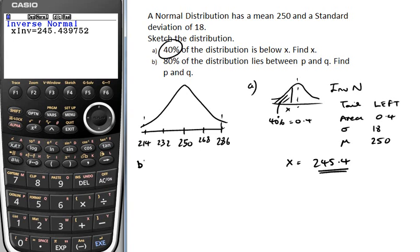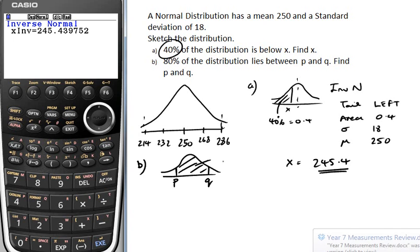The second question is, 80% of the distribution lies between two figures, P and Q. Well, it's not mentioned in this example, but these are symmetrical about the mean. So you can be pretty certain that the two figures you're looking for can be drawn in this way. Obviously, you could fix all sorts of different points, but they're symmetrical about the mean on the calculator. So we're looking for P and Q, and we need this area to be 80% or 0.8.